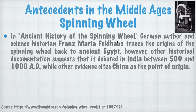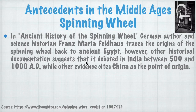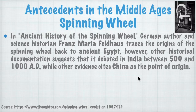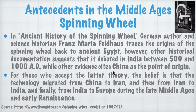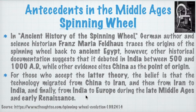In the ancient history of the spinning wheel, a book by German author and science historian Franz Maria Feldhaus traces the origins back to ancient Egypt. However, some historians suggest it debuted in India or China between 500 and 1000 AD. For those who accept China as the point of origin, the belief is that the technology migrated from China to Iran, then from Iran to India, and finally from India to Europe during the late medieval ages and the early Renaissance.